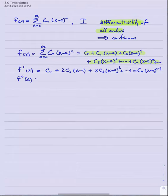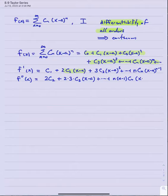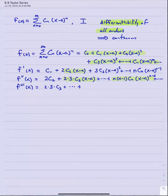Looking at the second derivative, the c1 disappears, and what we're left with is 2c2 plus 2 times 3 times c3 times x minus a, and in general n times n minus 1 times c sub n times x minus a to the n minus 2. Taking the third derivative, the constant term disappears, giving 2 times 3 times c3 plus dot dot dot, and in general n times n minus 1 times n minus 2 times c sub n times x minus a to the n minus 3.